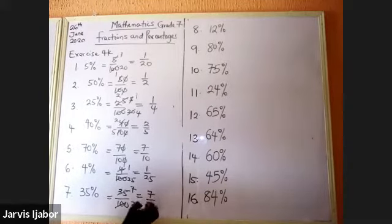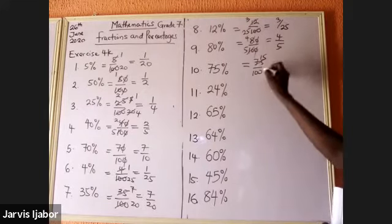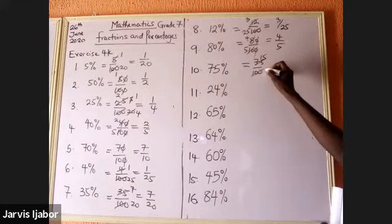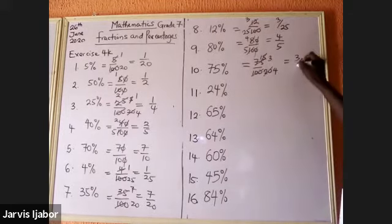80 over 100: cancel the zeros, then 2 goes into 4 twice and 2 goes into 5 — that's 4 over 5. Then 75 over 100: 5 goes into 75 fifteen times, 5 goes into 100 twenty times, then again 5 goes into 15 three times, 5 goes into 20 four times — that's 3 over 4.